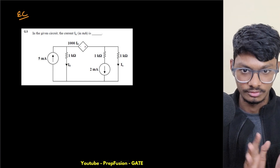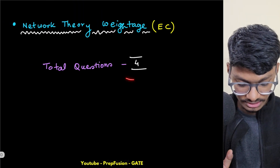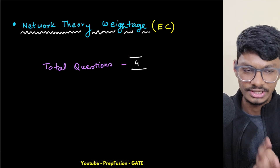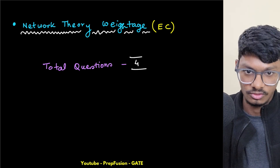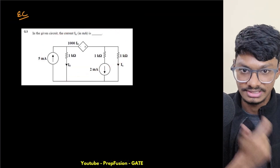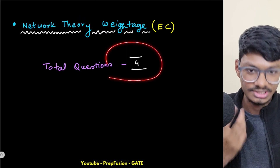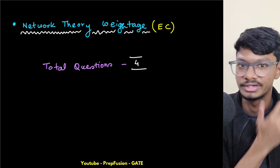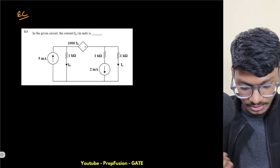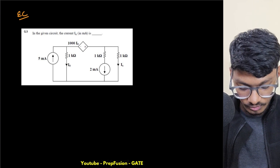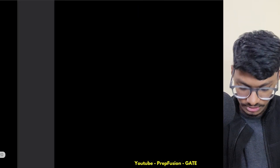Let's start. This is basically GATE 2024 network theory solutions. This first question is from the EC branch. From networks, around four questions came — I think the weightage would be around eight marks. We don't have the marks of each specific question, but guessing it's four questions, it may be six to eight marks. Generally four to five questions come from network theory. This first question is very simple — it's on KCL, KVL, and dependent sources.